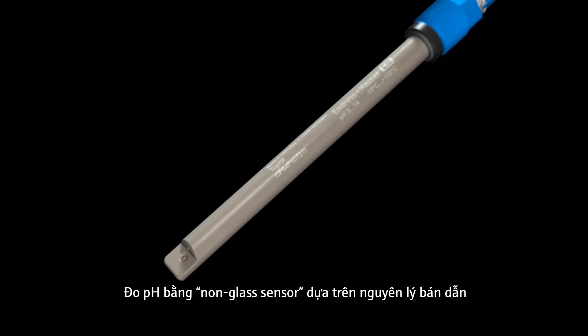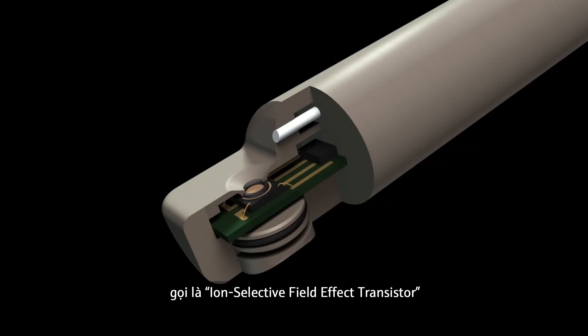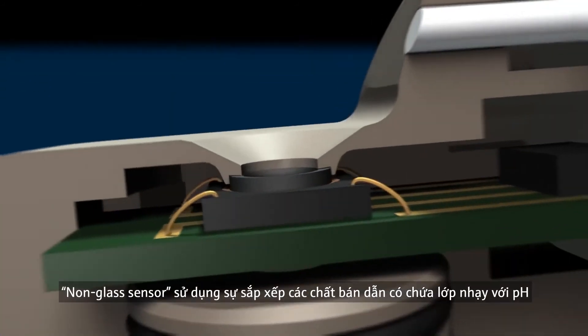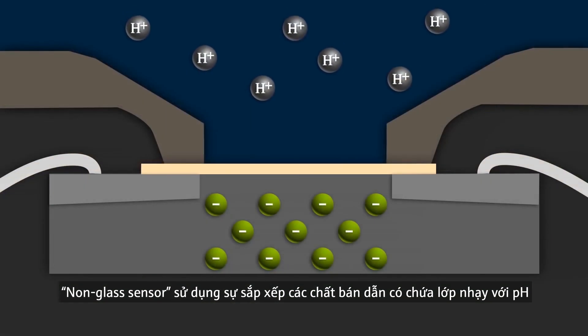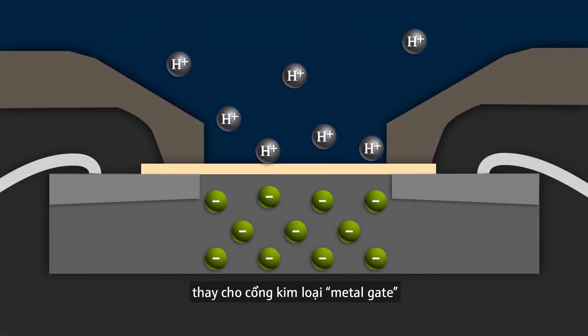pH measurement with non-glass sensors is based on so-called ion-selective field effect transistors, short ISFET. They use a MOS transistor arrangement, which contains a pH-sensitive layer instead of a metal gate.